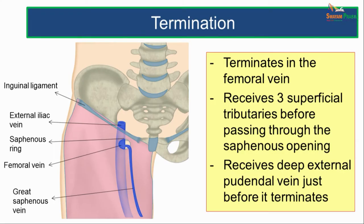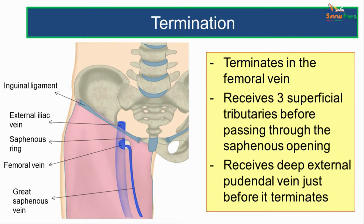Moving on to see how the great saphenous vein terminates. The great saphenous vein, in the upper part of the thigh, passes through the saphenous opening, pierces the cribriform fascia, and goes deeper to drain into the femoral vein. It receives three superficial tributaries just before passing through the saphenous opening, and once through the opening, it receives the deep external pudendal vein just before it terminates by opening into the femoral vein.